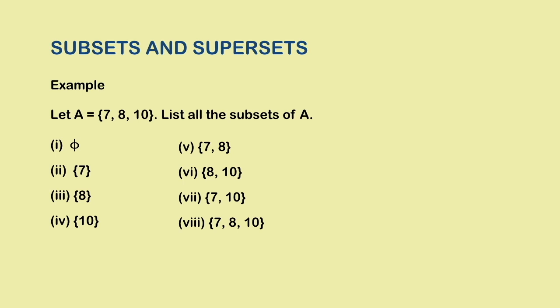So, if you follow this method, you will start with the null set and end with the original set itself. Also, you can see that the list contains 8 subsets. In general, if a set has n elements, the total number of possible subsets it has is 2 raised to the power n.